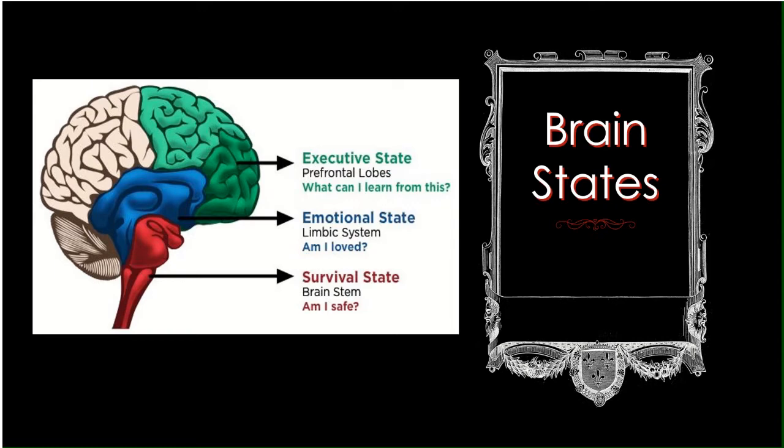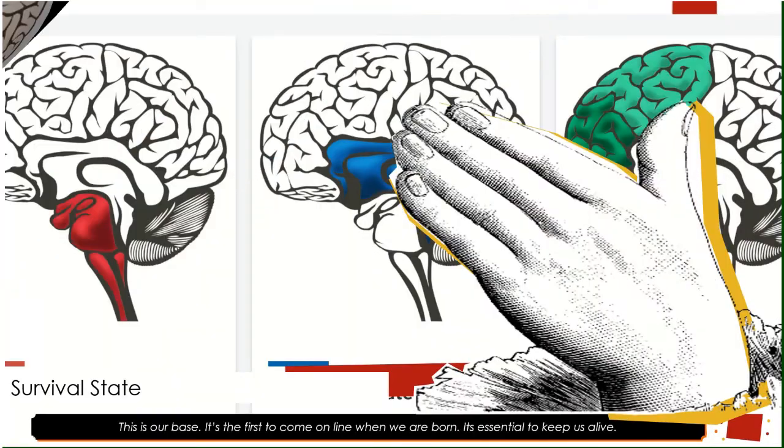All this time we spend telling kids what we want them to do instead of throwing or kicking or screaming, we're usually telling it to them when they're in one of these lower brain states. They can't absorb it. We need them to be in their executive state to hear us and learn what we want them to do next time.